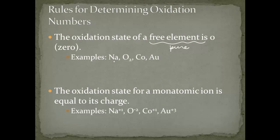Examples of pure elements include sodium, O2 (the pure form of oxygen), cobalt, and gold. For any of these, the oxidation number is zero. It's also worth noting that a free oxygen atom, or ozone (O3), would still be zero. The main idea is that these are pure elements — whatever allotrope it might be, the oxidation number is still zero. Same thing with carbon, whether it's diamond, graphite, or charcoal — it's zero.